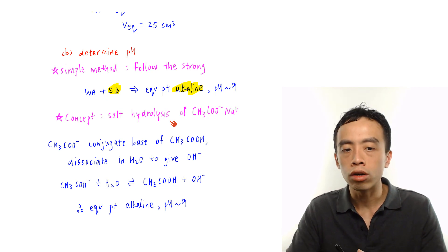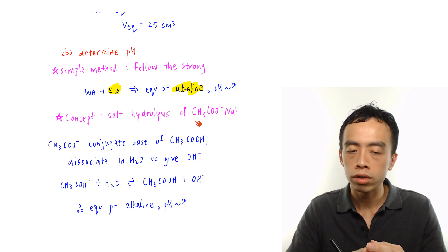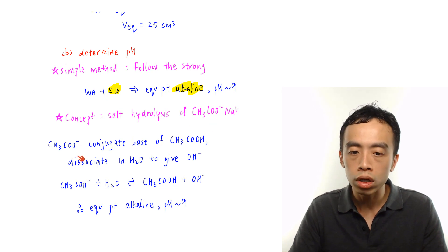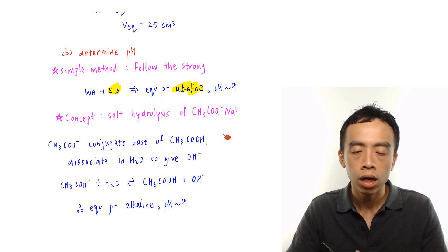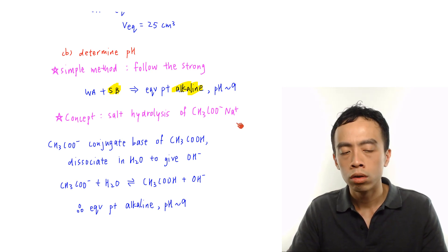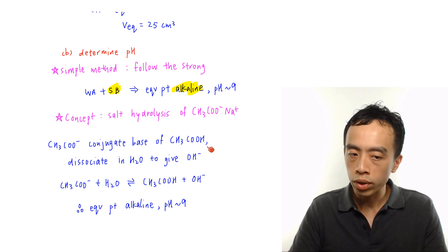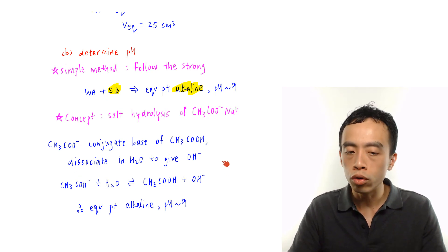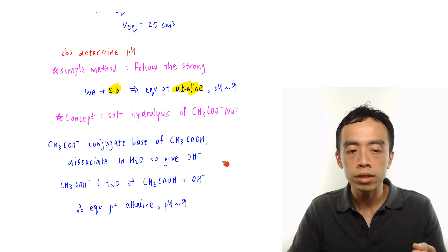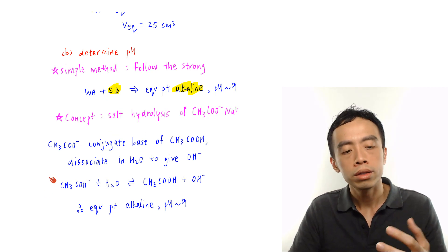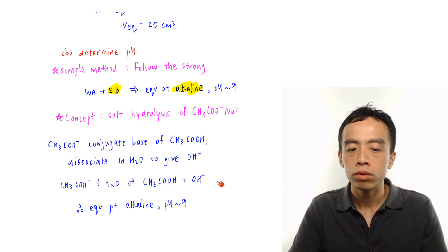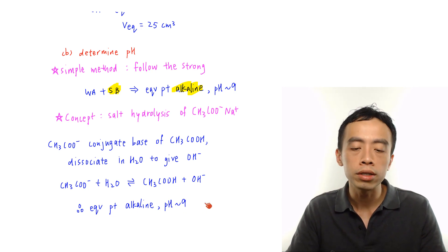If the question asks us to explain, then the concept falls under salt hydrolysis. This acid-base reaction will produce the salt sodium ethanoate. CH3COO⁻ is the conjugate base of the weak acid CH3COOH, while Na⁺ is neutral because it comes from a strong base. Since CH3COO⁻ is the conjugate base of a weak acid, it will release OH⁻ in solution: CH3COO⁻ + H₂O ⇌ CH3COOH + OH⁻. Since it releases OH⁻, the solution is alkaline, so the equivalence point pH is estimated to be roughly 9.